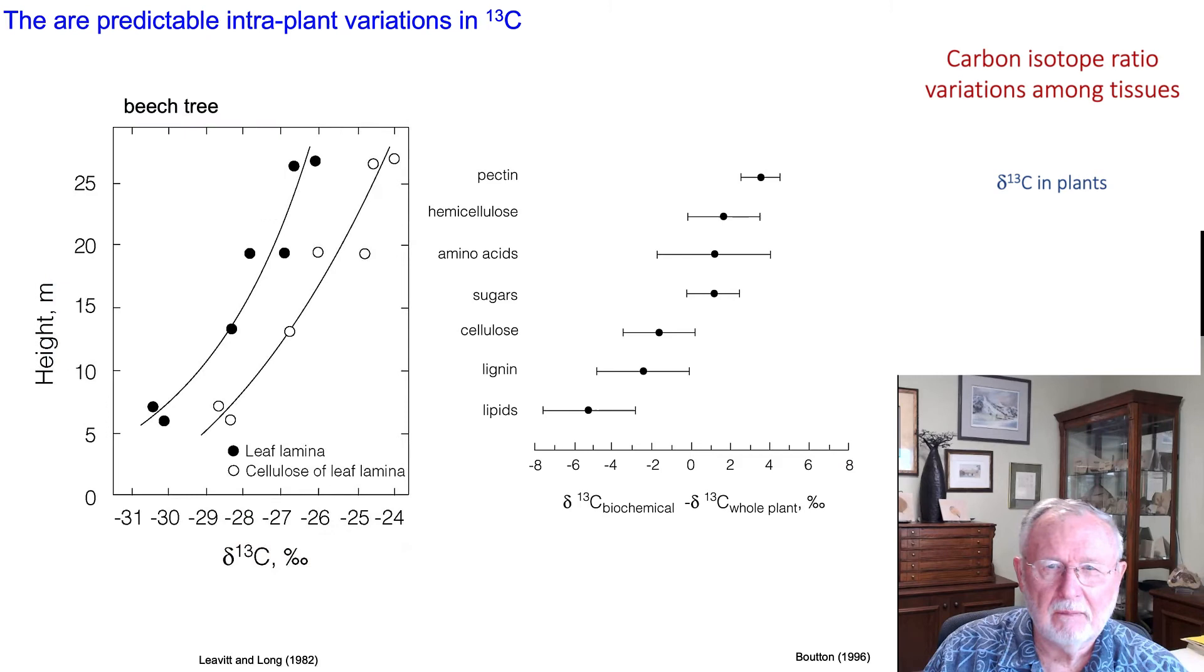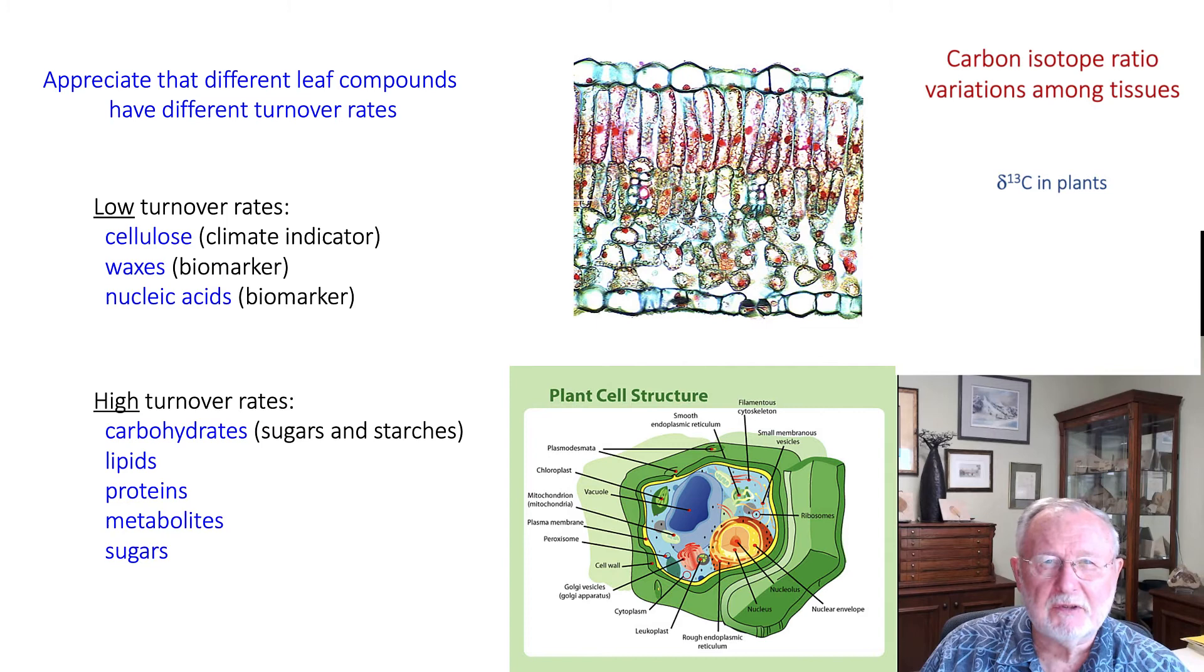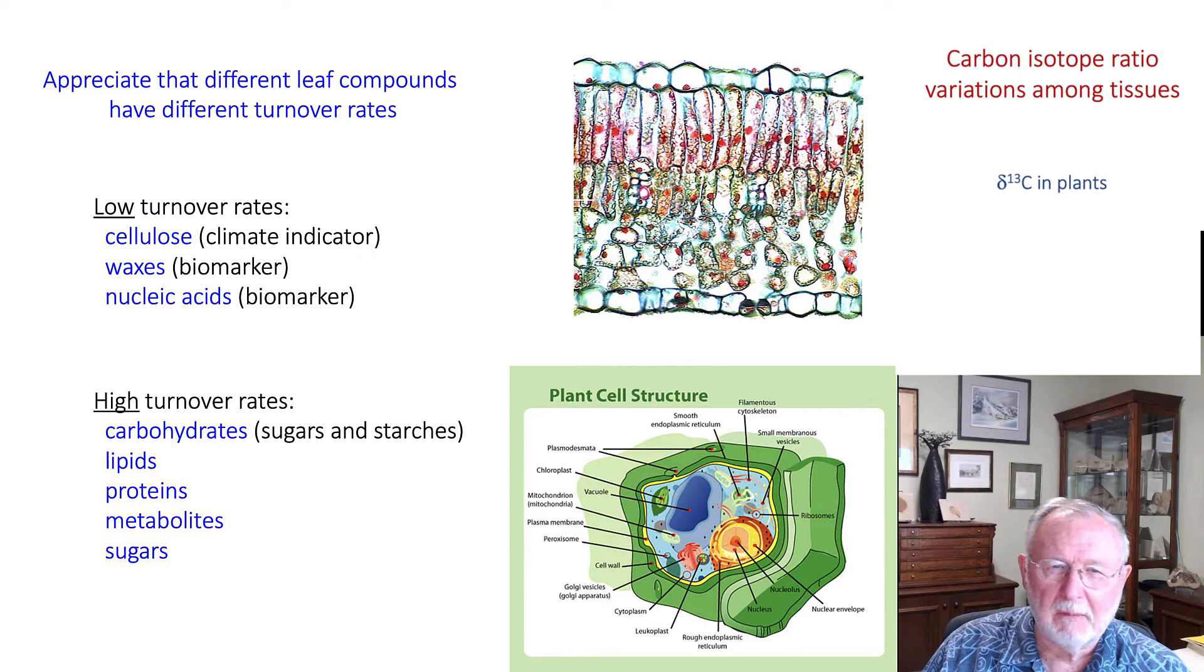It's important to appreciate that different leaf compounds have different turnover rates within leaves. So there's that variation associated with subcellular fractionations. But some compounds have low turnover rates and others have high turnover rates. Molecules with low turnover rates, such as cellulose, waxes, and nucleic acids, are useful biomarkers. John Roden will talk about cellulose as a biomarker, and Kate Freeman will talk about waxes and nucleic acids.